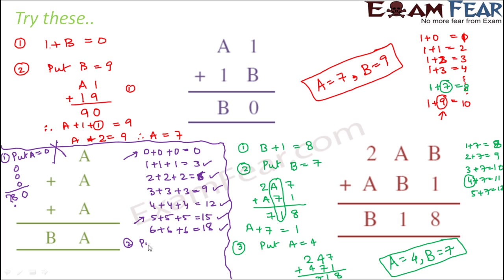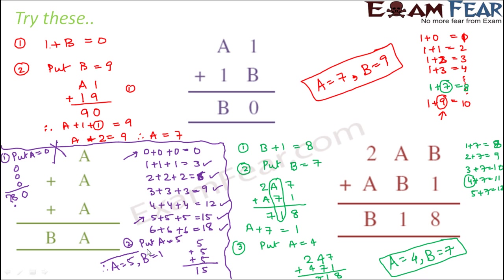The second possibility: put A equal to 5. Then 5 plus 5 plus 5 equals 15. The units digit is 5, which matches A, and B equals 1. Therefore, A is equal to 5 and B is equal to 1. I am writing all of these to explain it clearly since you are learning it for the first time, but in your examination you do not need to write all of this — you can do it orally as well.